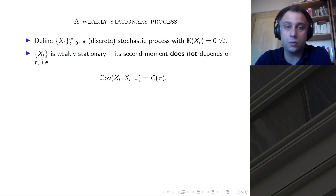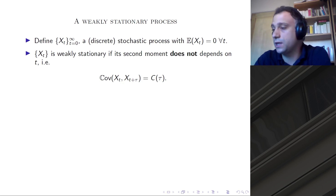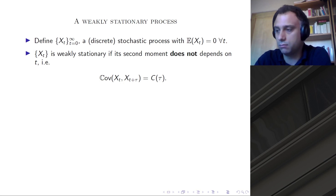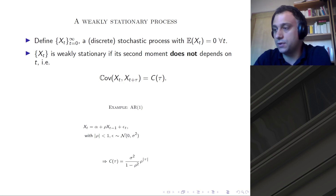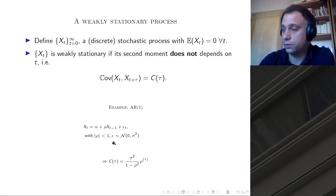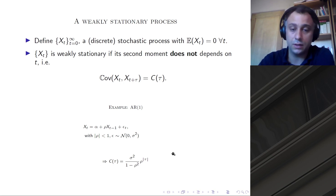Let X be a discrete zero-mean stochastic process. We say that X is weakly stationary if its second moment does not depend on the time t. For instance, there is the well-known autoregressive process, for which direct calculation provides the following form of the autocovariance that indeed does not depend on time.